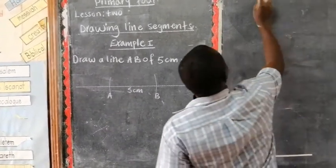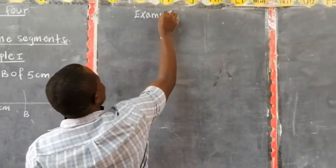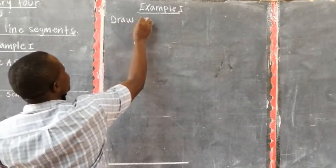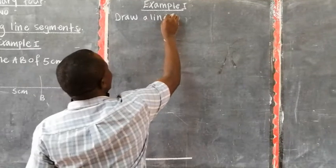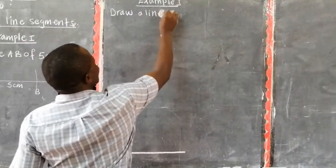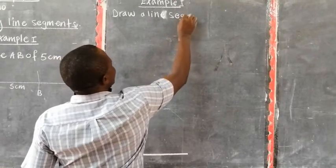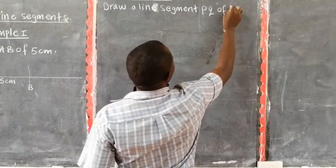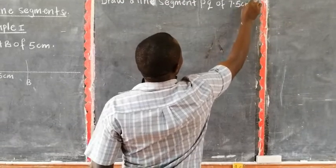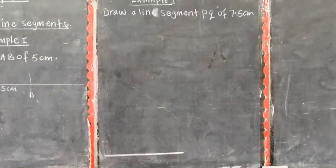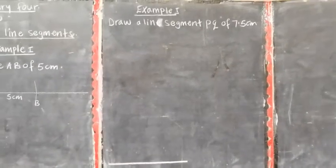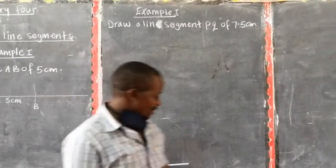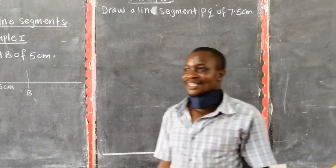Let's have example two here. Draw line segment PQ of 7.5 centimeters. Someone will ask, teacher, we don't have point in our ruler. We have, but it is not written there, but it is there.